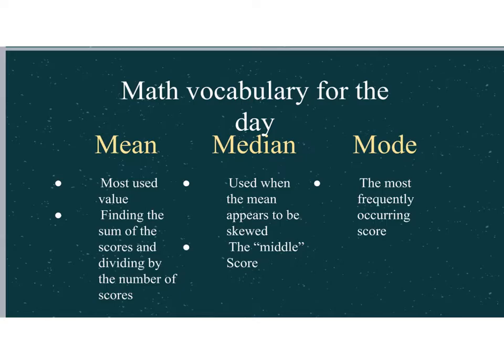Some of the math vocabulary that we're going to be talking about today applies to stuff you've done in the past. You've probably done something with mean, median, and mode. So mean is what you're going to see the most of. The mean is the same as average. It's finding the sum of the scores and dividing by the number of scores. The next is the median. That's going to be used when the mean appears to be skewed. You might also hear this called the middle score. And the final one we're talking about today is the mode. That's whatever number is appearing the most, the most frequently used number.